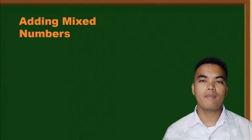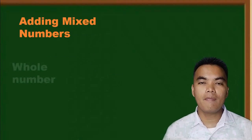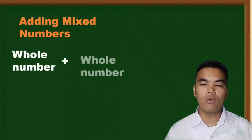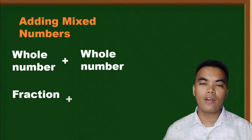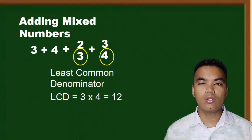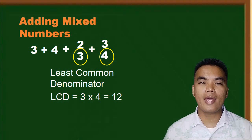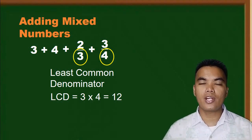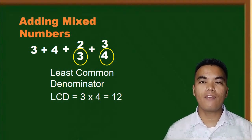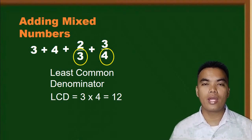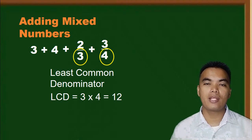This is our lesson about how to add mixed numbers. Remember: add separately the whole numbers from the fractional parts. When adding mixed numbers with dissimilar fractional parts, find the common denominator to make the denominators the same so you can add them easily.